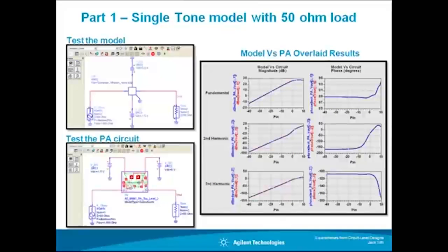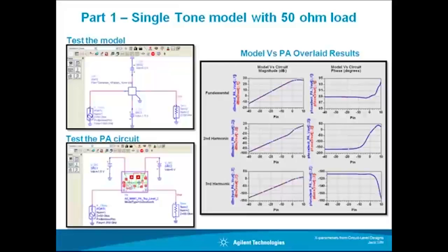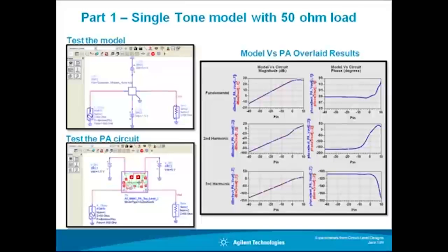In part one I explained what X parameters are and I demonstrated using ADS how easy and fast it is to generate a one-tone 50 ohm load X parameter model from an LTE circuit level PA. I showed how the X parameter model is as accurate as the circuit level design in all dimensions — linear and nonlinear — and ideal to use in a system that contains cascaded 50 ohm matched modules.